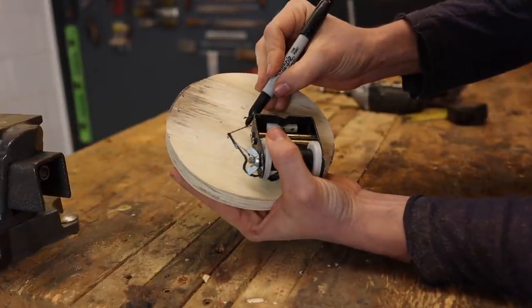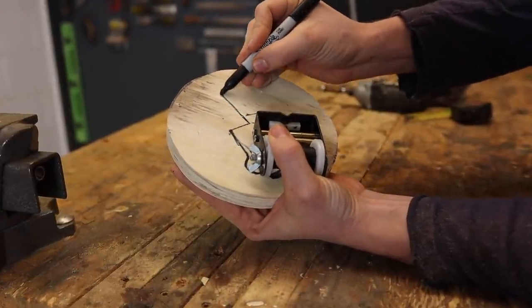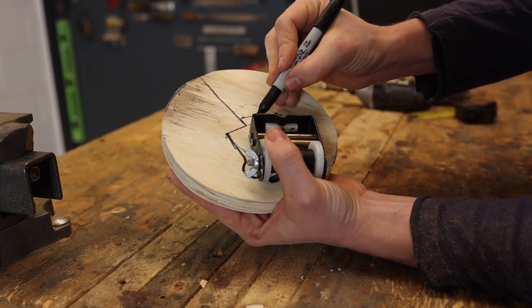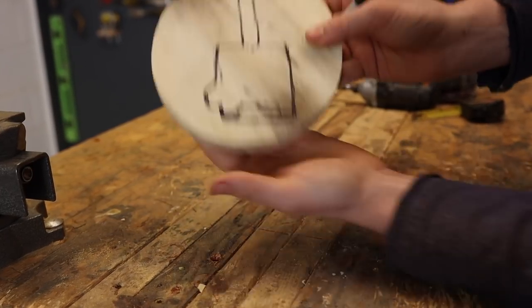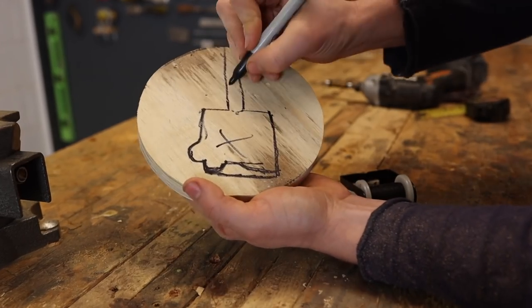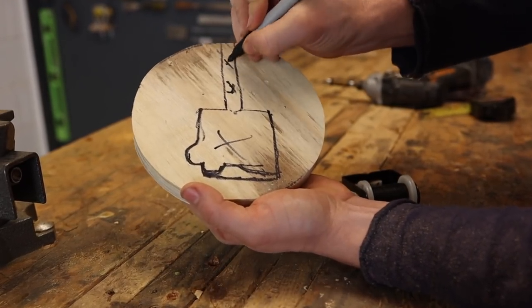Now we need a place for the string to slide through. So it's just going to come directly up from there, basically like that. So basically I need to cut out all of this to start.